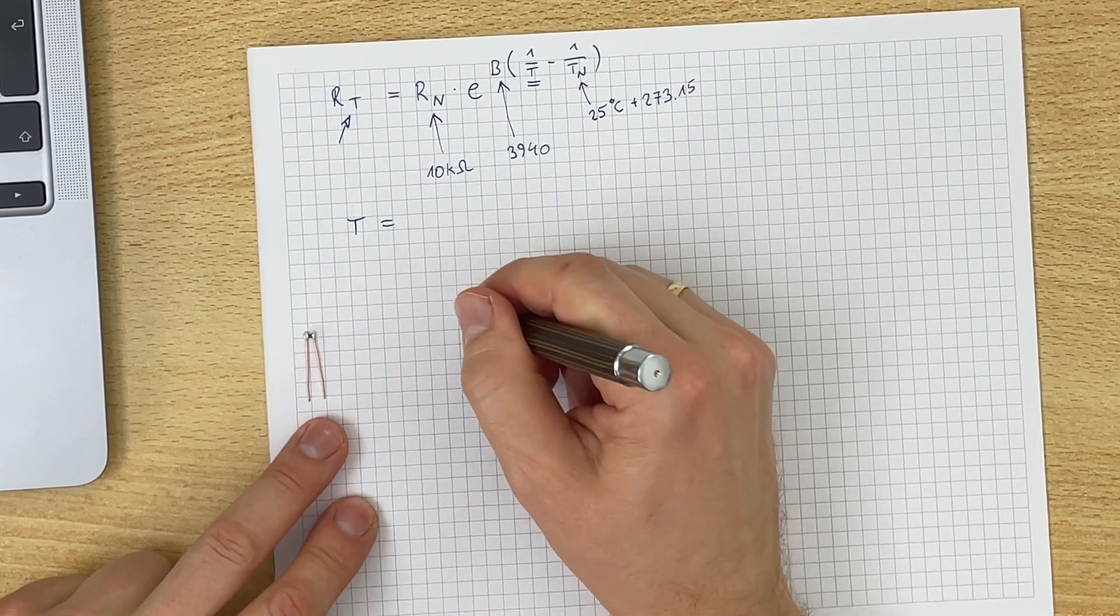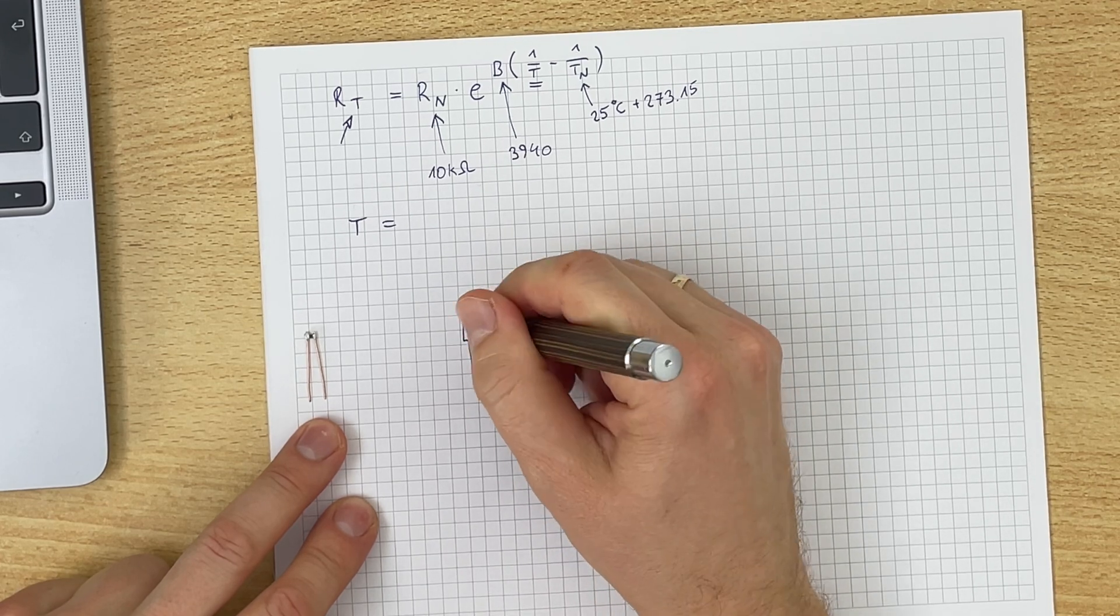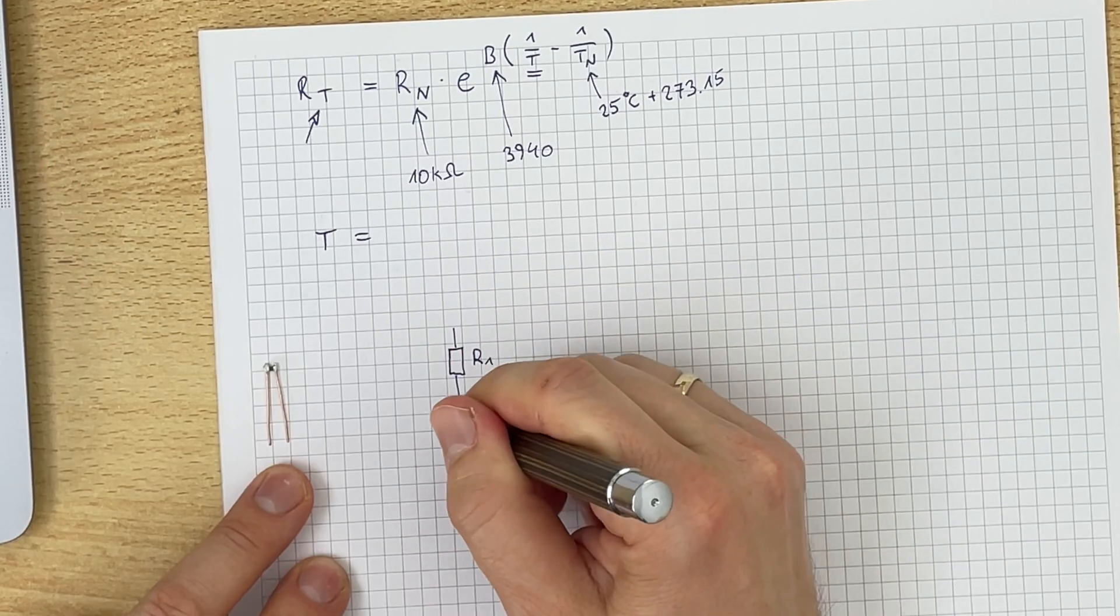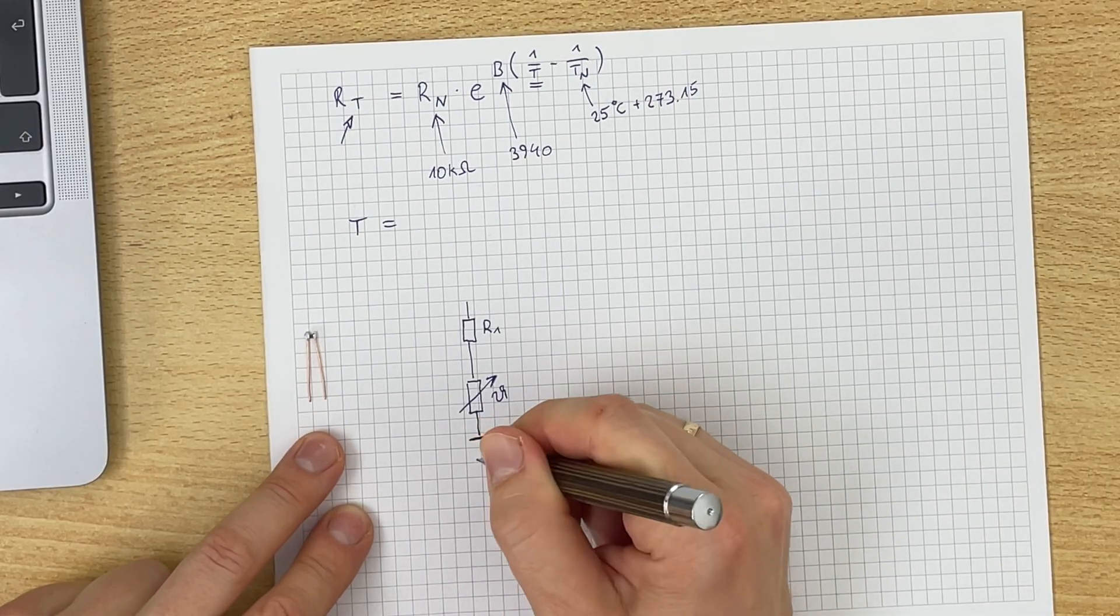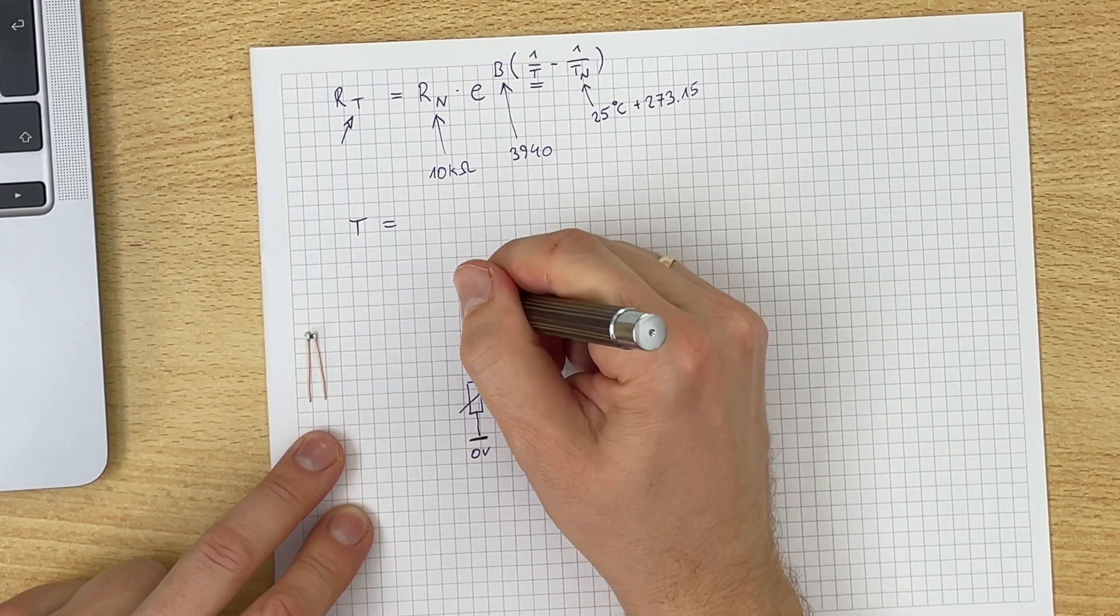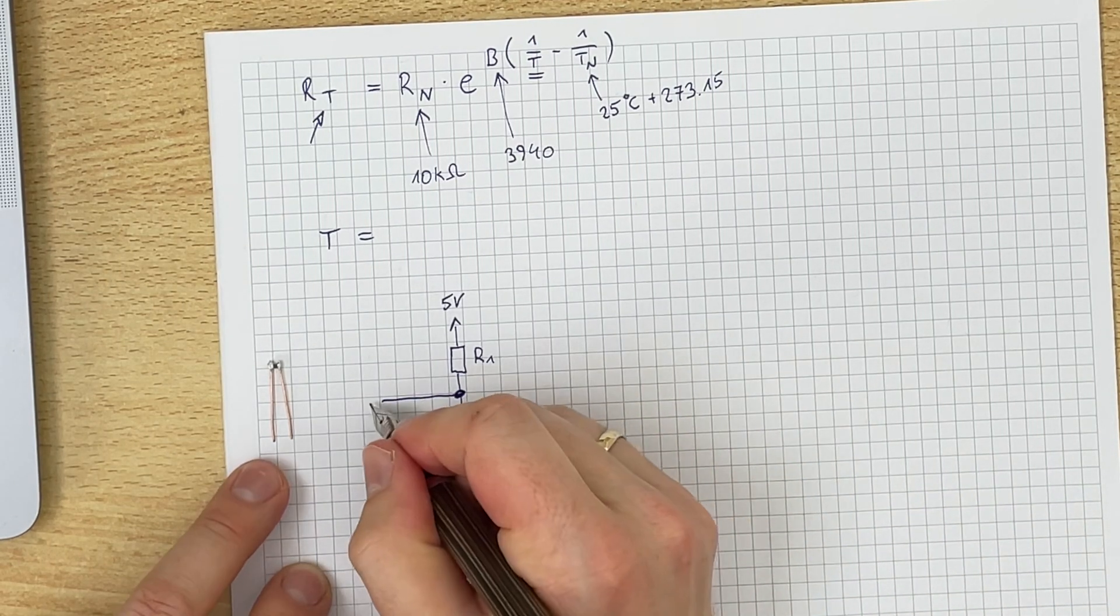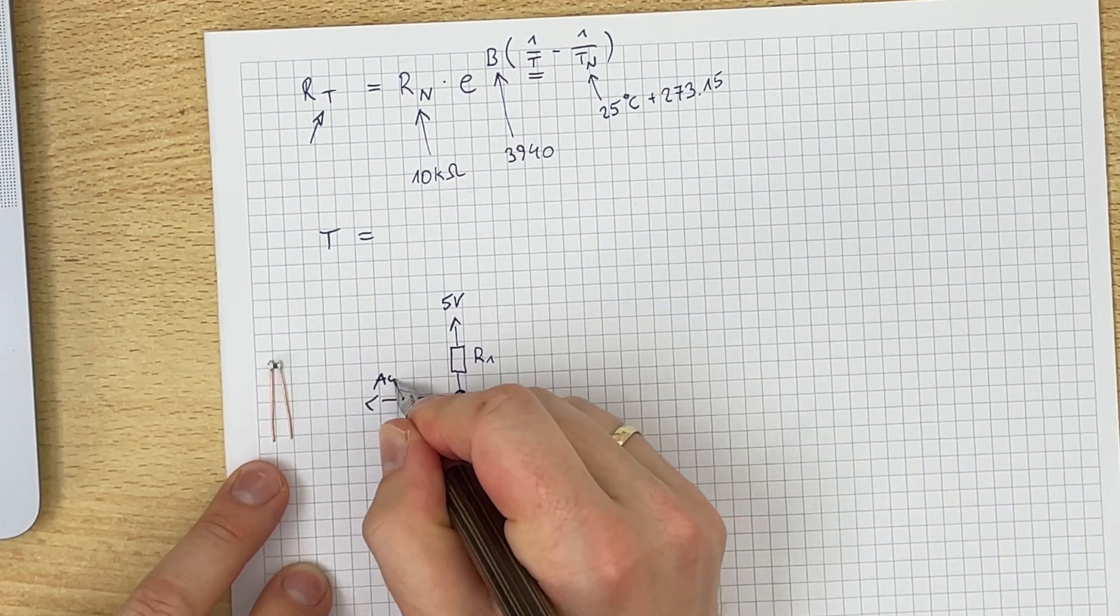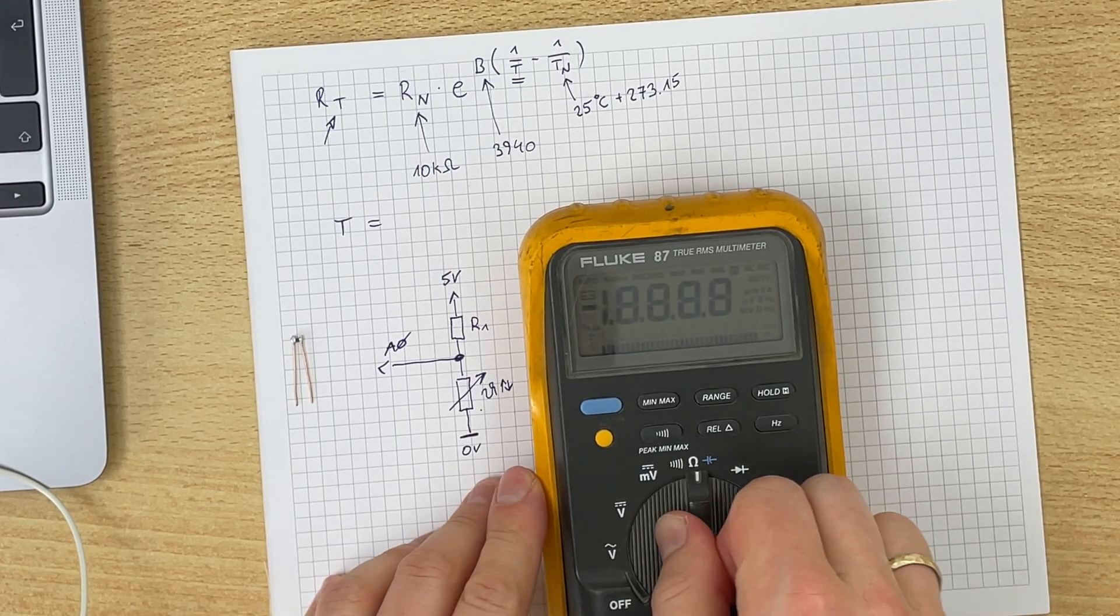Now the basic principle is we have one resistor that is fixed, I call it R1, and we have our NTC. We will connect this to ground to zero volts, and we will connect this to five volts. And then this point right here, we will measure. This will go to analog pin zero for example. By the way, NTC means if the temperature rises, then the resistance goes down.